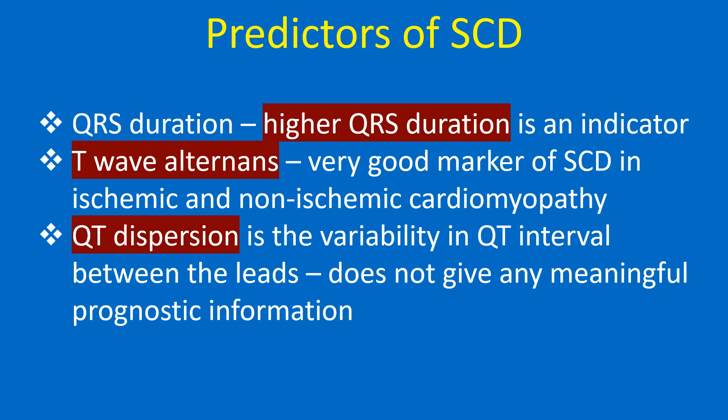QRS duration: a higher QRS duration is an indicator of SCD risk. T-wave alternans is a very good marker of SCD in both ischemic and non-ischemic cardiomyopathy.